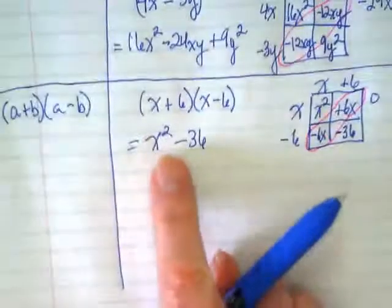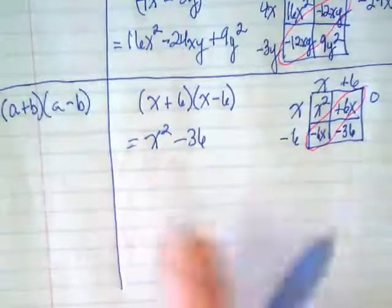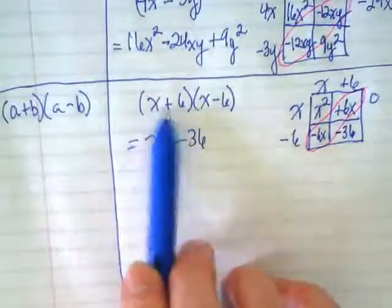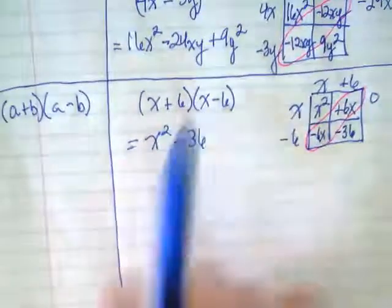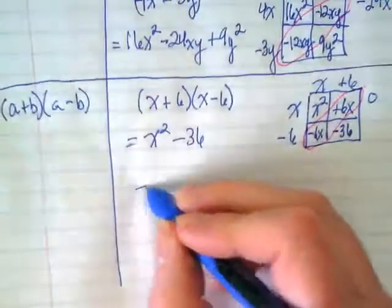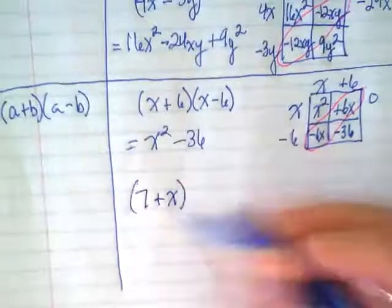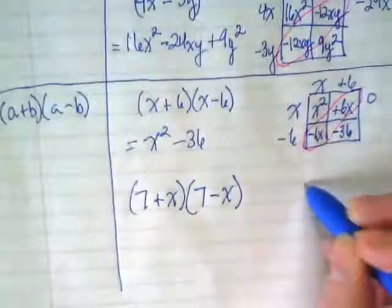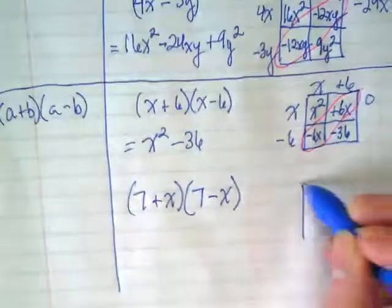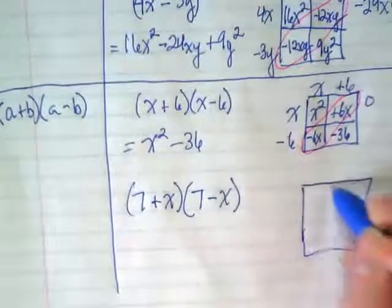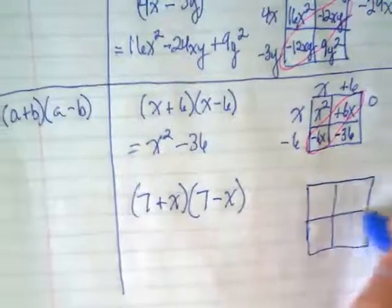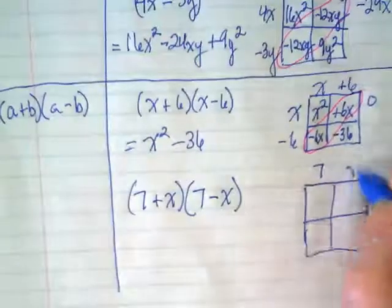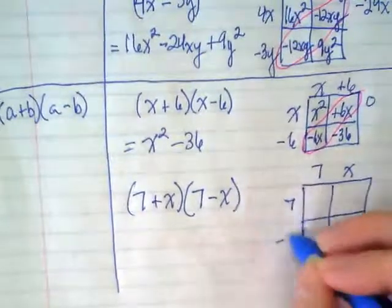That's going to happen where you end up with just two terms. Every single time that your terms up here are the exact same numbers, except there's a positive in one and a negative in the other. Let's show one more example to prove that. We're starting with the number first this time, the constant. (7+x) times (7-x). Our last box of the day for the examples, and then I'm going to give you guys some practice work. 7 and positive x. 7 and negative x.